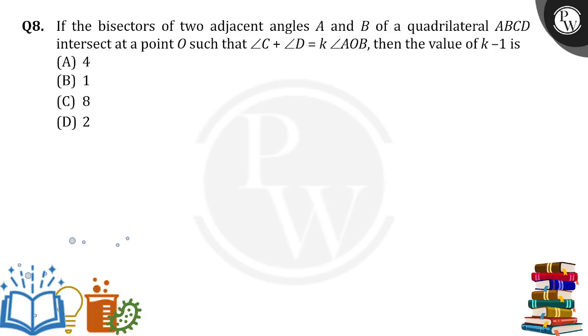Hello everyone, the bisectors of the two adjacent angles A and B of quadrilateral ABCD intersect at a point O such that angle C plus angle D equals k times angle AOB, and the value of k minus 1 is how much?